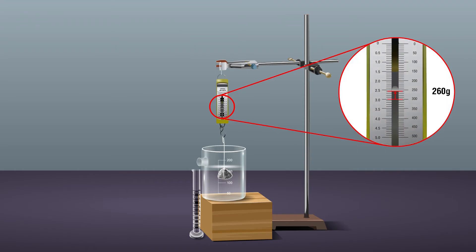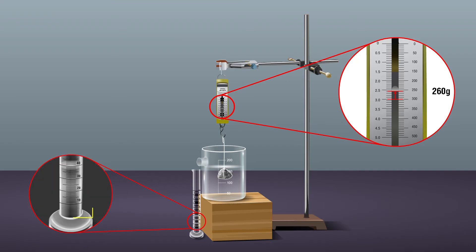Measure the weight of the object in tap water using the spring balance. Collect the water displaced by the object in the overflow can that flows out from its spout into the measuring cylinder. Measure the volume of displaced water in the measuring cylinder.